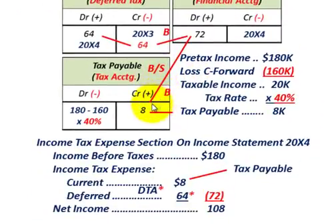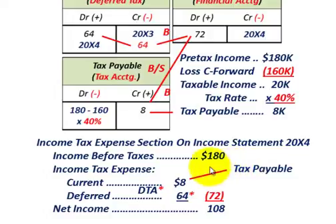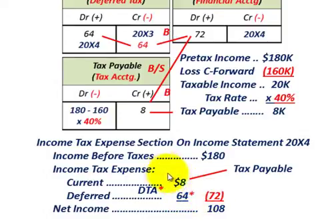On the income statement for year 20x4, we start with income before taxes of $180,000. The income tax expense has a current portion of $8,000 (tax payable) plus the deferred portion of $64,000 (deferred tax asset used up), totaling $72,000 of income tax expense. Subtracting that from $180,000 gives net income for the year of $108,000.